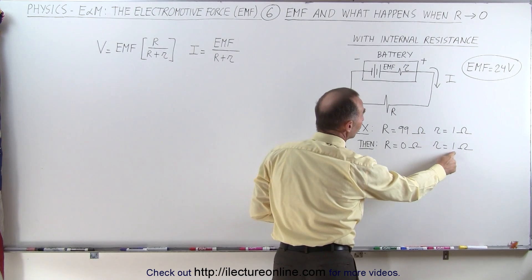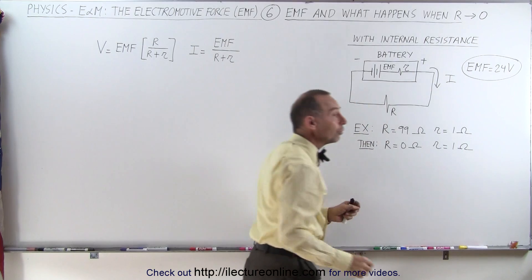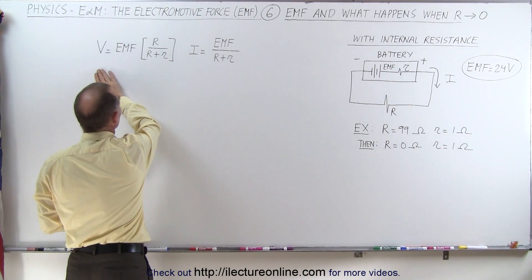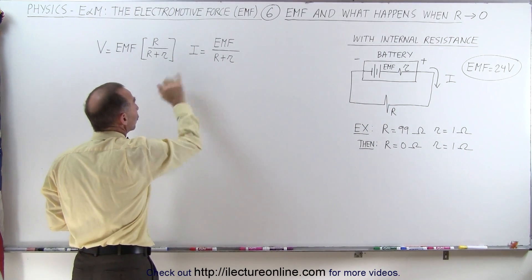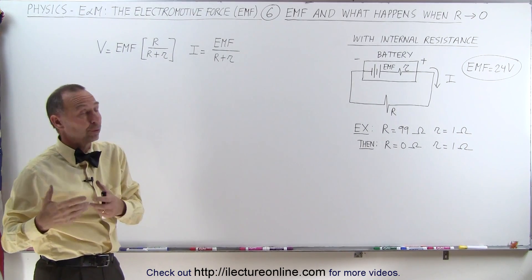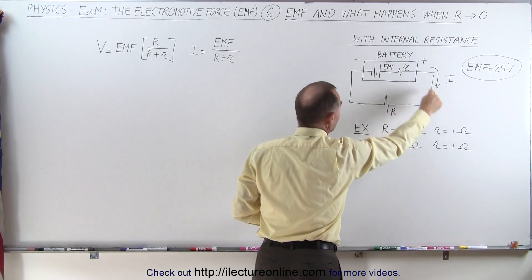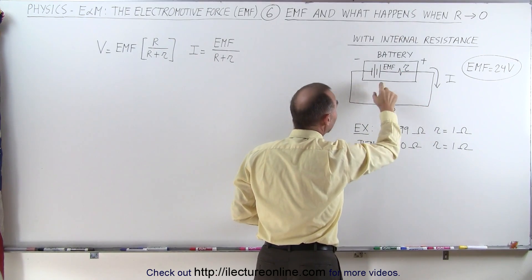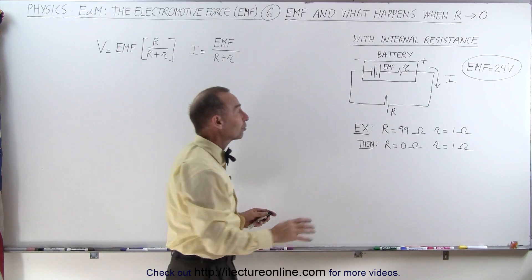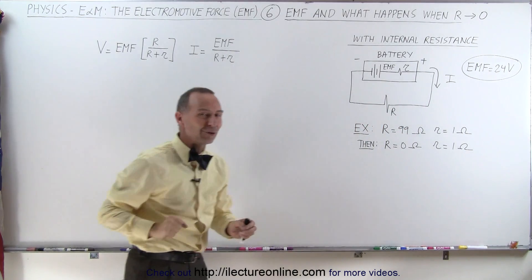The internal resistance of the battery is 1 ohm, and the EMF provided by the battery is 24 volts. We're going to calculate both the voltage supplied by the battery and the current to the circuit. Then we're going to allow the circuit resistance to go to zero — the internal resistance is still 1 ohm and the EMF is still 24 volts — and see what happens to the voltage and current through the circuit and battery. It's not a good situation.